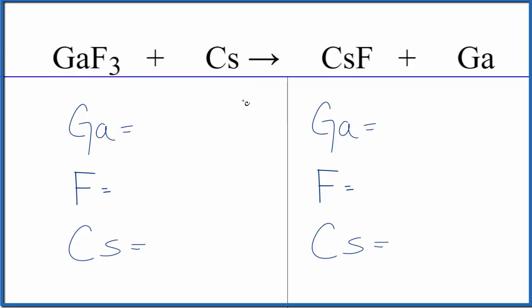The type of reaction is a single displacement reaction. The cesium displaces the gallium, so we end up with gallium all by itself. Now the cesium is with the fluoride. This is single replacement, also called single displacement.